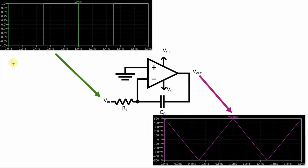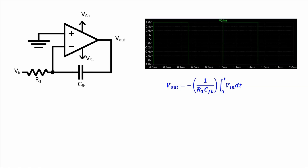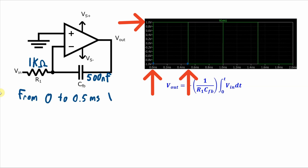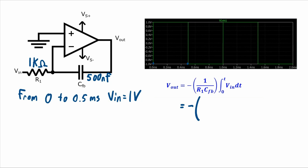For example, when a square wave like this V_in is integrated, you get a triangle wave as you can see in the output. Let's go through this example in more detail. V_in is a 50% duty cycle square wave with a frequency of 1000 Hz. R1 is set to 1 kΩ and the feedback capacitor is 500 nF. From time 0 to 0.5 ms, V_in is at 1 volt, so V_out can be determined from the equation: negative 1 over (1000 × 500 nF) times the integral from 0 to 0.0005 of 1 dt.